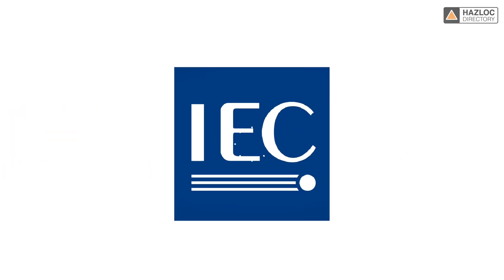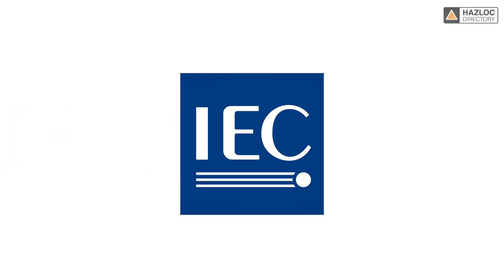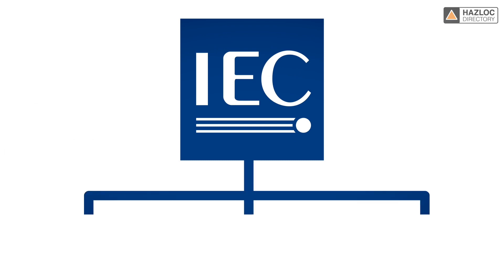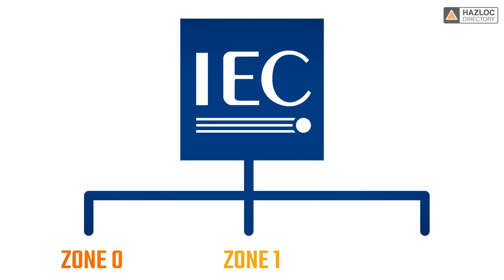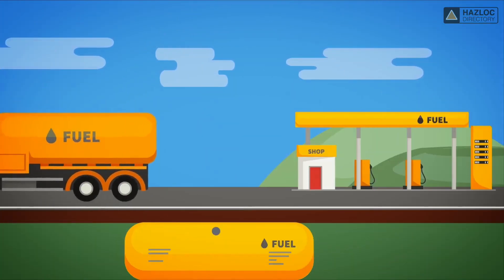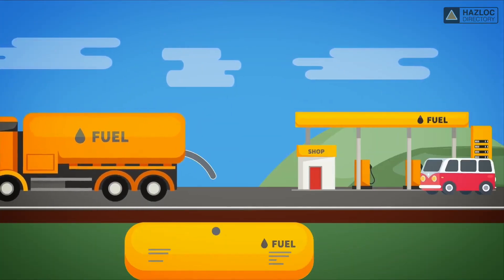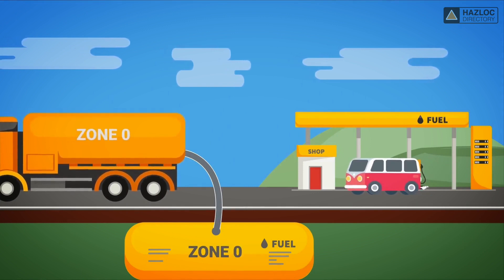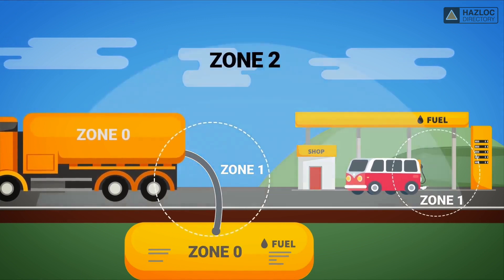As per International Electrotechnical Committee standards, the classified areas are categorized in three groups: Zone 0, Zone 1, and Zone 2. To make this even easier to understand, look at this diagram of a typical petrol station. The areas classified as Zone 0, Zone 1, and Zone 2 have been identified.